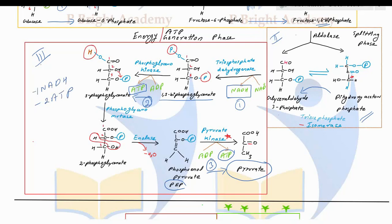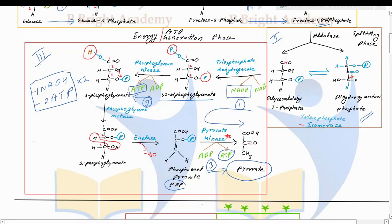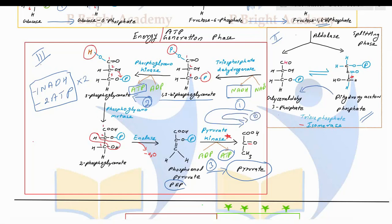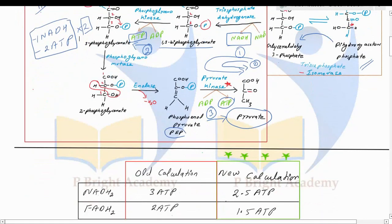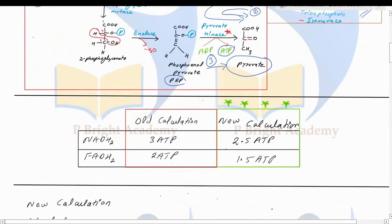We need to multiply by 2 because once glyceraldehyde-3-phosphate undergoes conversion into pyruvate, dihydroxyacetone phosphate gets converted to glyceraldehyde-3-phosphate, which repeats the same steps to give pyruvate a second time. This is the second time the cycle repeats, giving us the final product — pyruvate — as the end product of glycolysis.